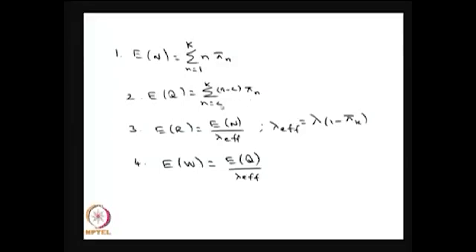You can get the average number of customers in the system and the average number in the queue — that is the sum of (N minus C) times pi N, summed from C to K — and the average time spent in the system. Since it is a finite capacity, you must find the effective arrival rate: lambda times (1 minus pi K), since (1 minus pi K) is the probability the system is not full. Substitute and use Little's formula to get average times in system and queue.